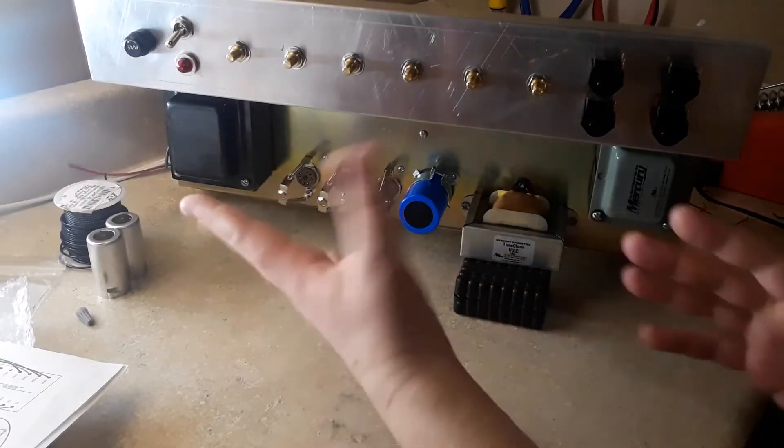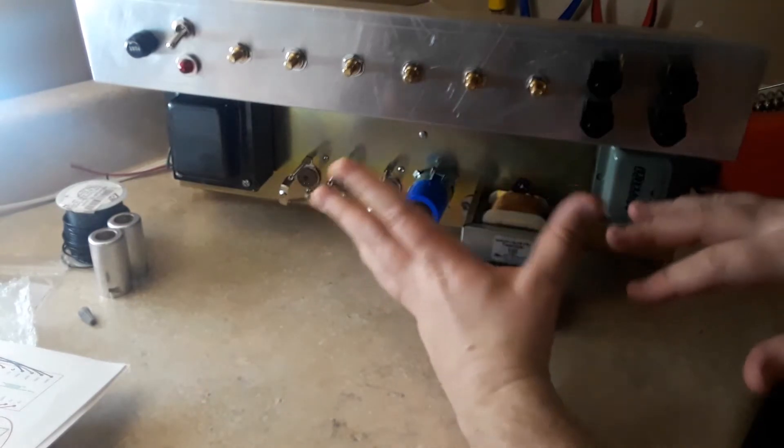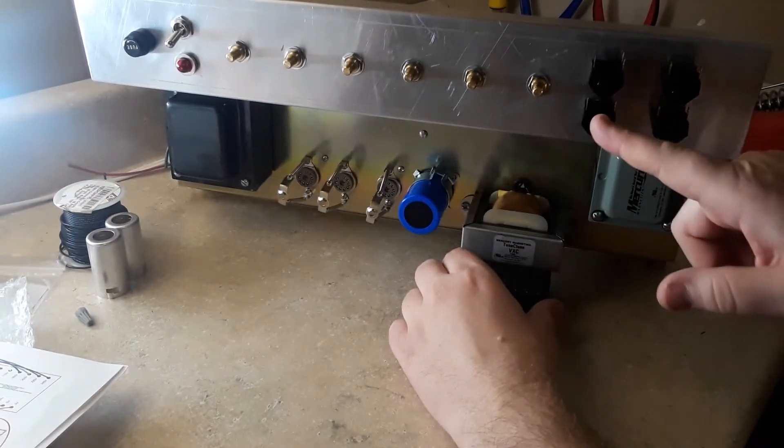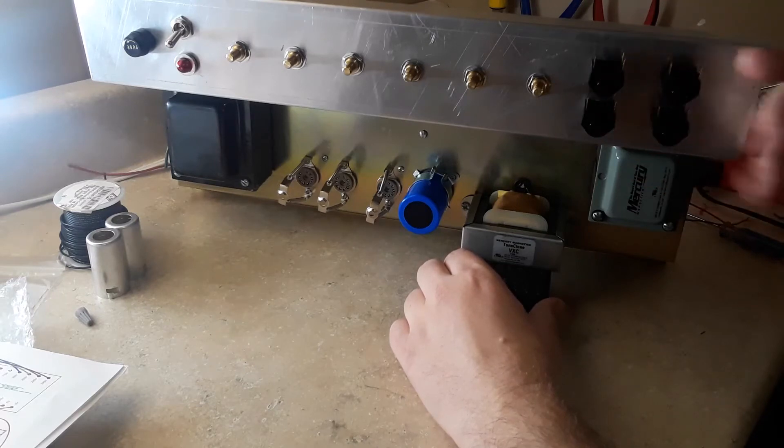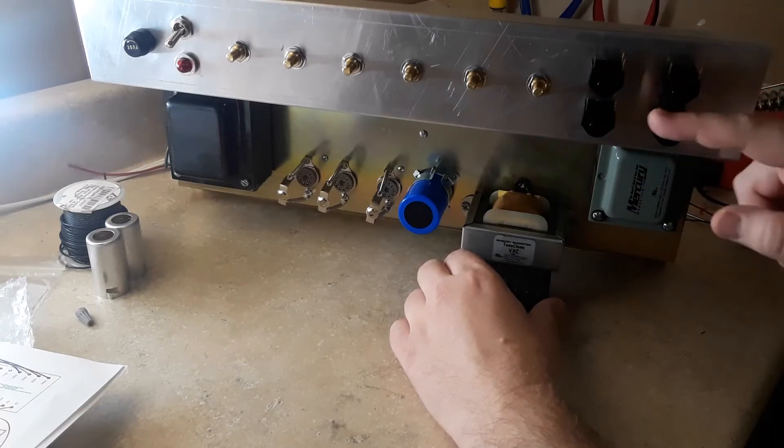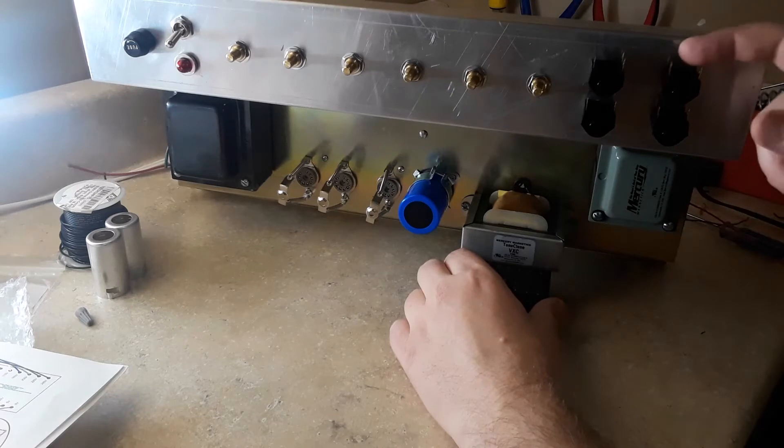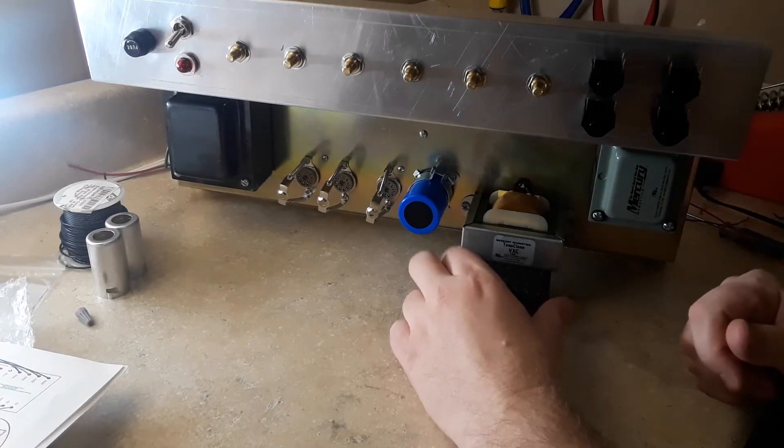As you can see, I've got the chassis rotated and kind of on its side a little bit. I've got my input jacks installed on the outside of the chassis, where I can easily solder all the components that I need to, and then rotate them back around and install them the way that they're meant to be.